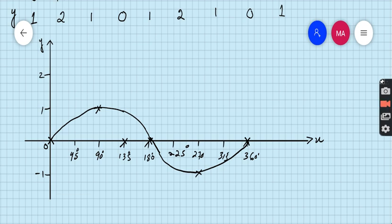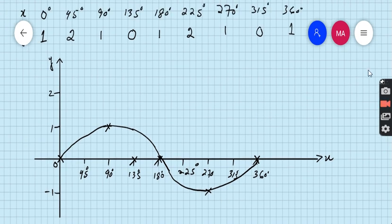Now I will use another color pen to draw the second graph. When x is 0 then y is 1, this is the first point. When x is 45 then y is 2. When x is 90 then y is 1. When x is 135 then y is 0. When x is 180 then y is 1.